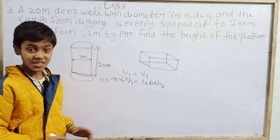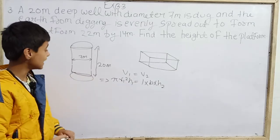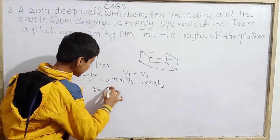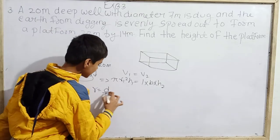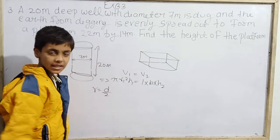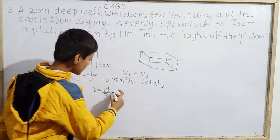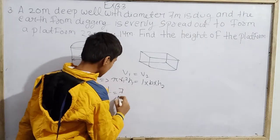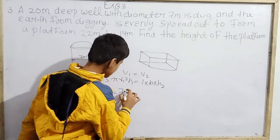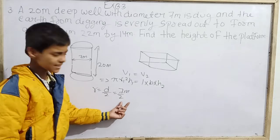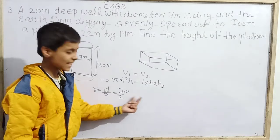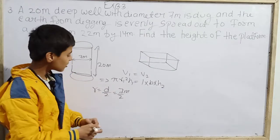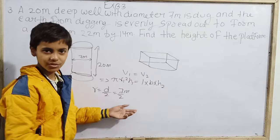We need the radius for the formula. Radius equals diameter divided by 2. The diameter is 7, so the radius is 7 by 2, which is 3.5 meters.